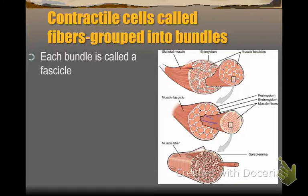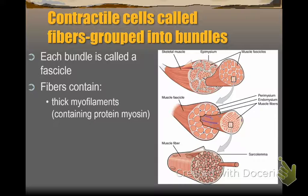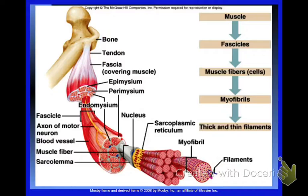This slide is a review showing the breakdown of a muscle. When you take a muscle as a whole, each muscle is bundled into fascicles. Within each fascicle there are multiple muscle fibers. Each muscle fiber has multiple myofibrils, and those myofibrils are composed of thick and thin filaments. The flow chart goes: muscle → fascicle → muscle fiber → myofibrils → thick and thin filaments, from largest most complex structure down to individual structure.